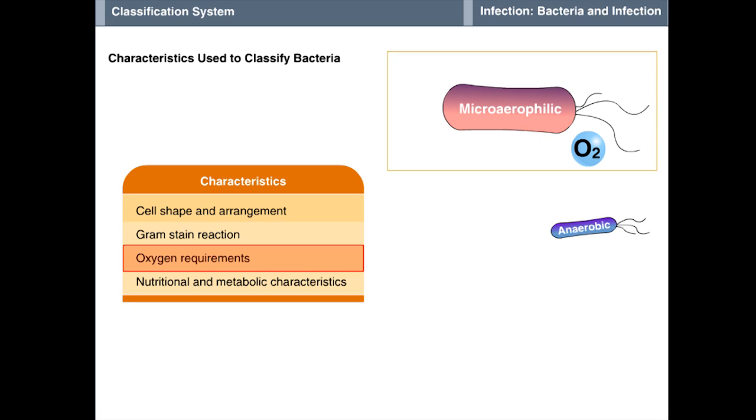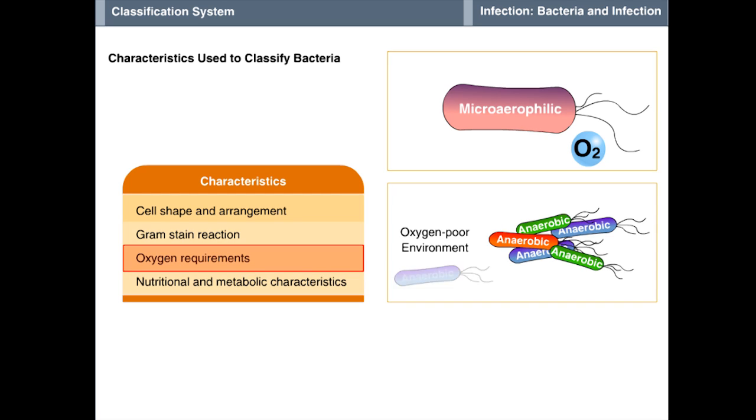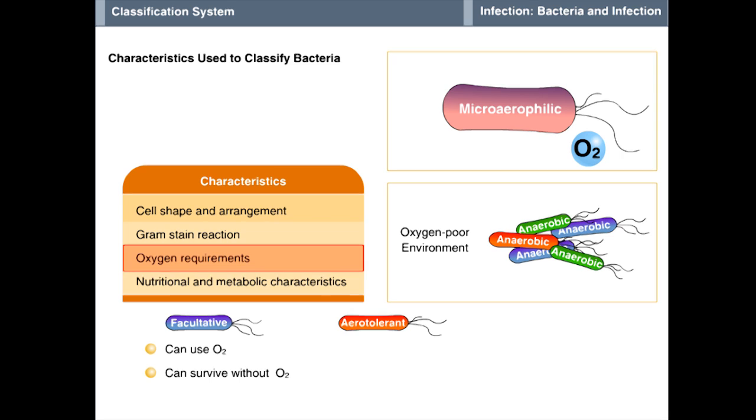In contrast, many anaerobes are less fragile. In particular, facultative anaerobes, which use oxygen when it is available but can survive without it, are the most adaptive bacteria. Anaerobes also include aerotolerant and obligate bacteria. Aerotolerant anaerobes cannot use oxygen but are usually not damaged by oxygen. Obligate anaerobes are unable to use oxygen and are damaged by oxygen.